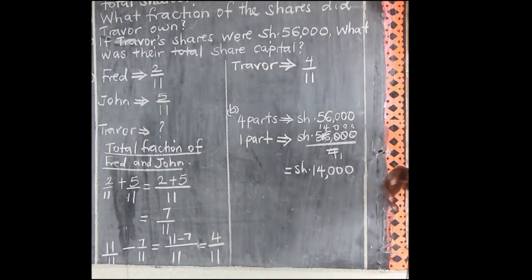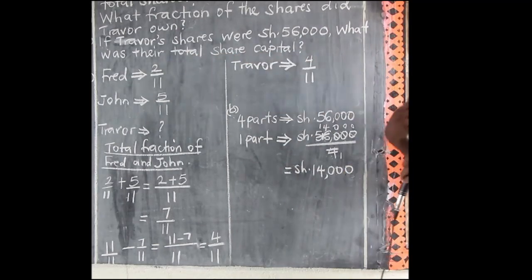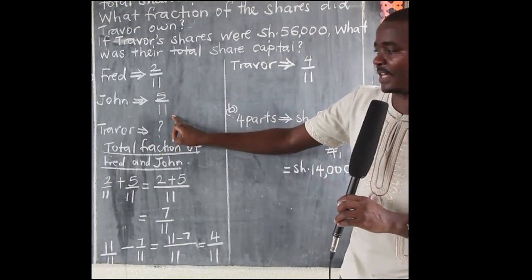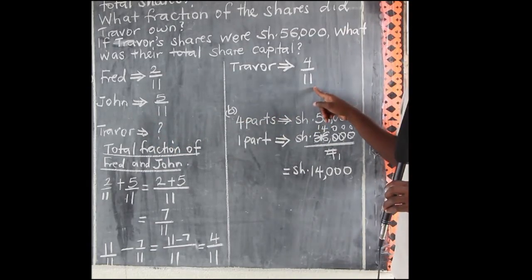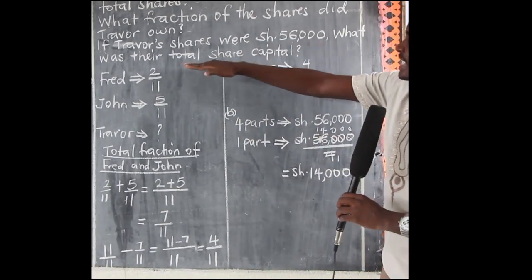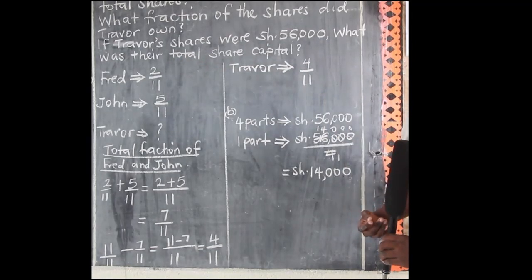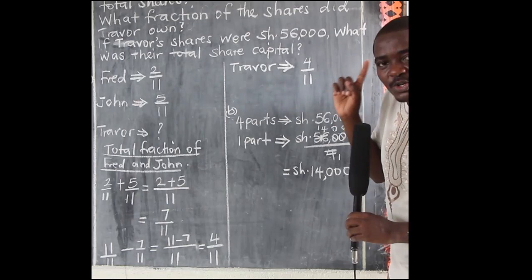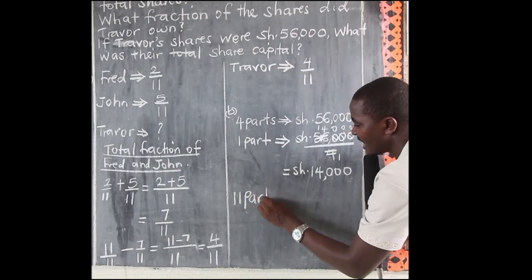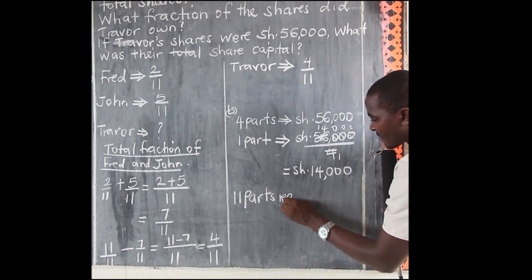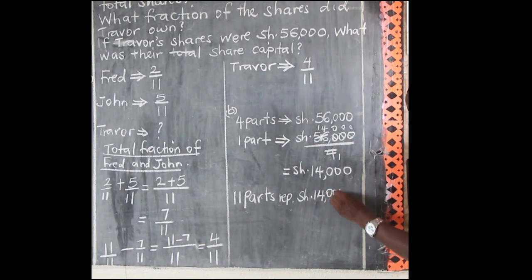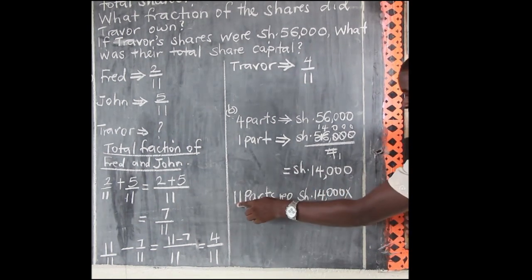What about the parts that represent the total share capital? Remember Fred has 2 out of 11, John has 5 out of 11, Trevor has 4 out of 11 — so everybody is out of 11. Our total parts representing the total share capital will be 11. So 11 parts represent 14,000 shillings times 11.